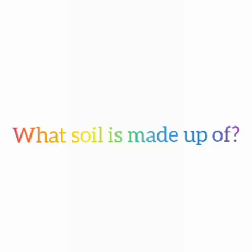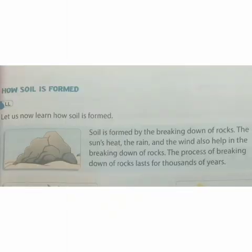Can you tell me what soil is made up of? It is made up of tiny bits of stones and mud. Let us see how soil is formed — soil is formed by the breaking down of rocks.